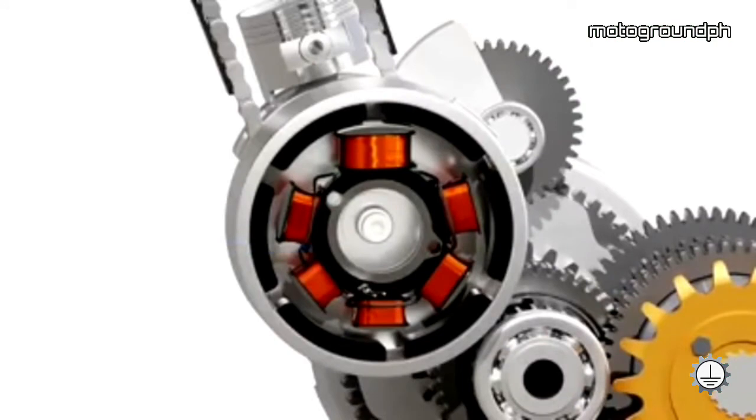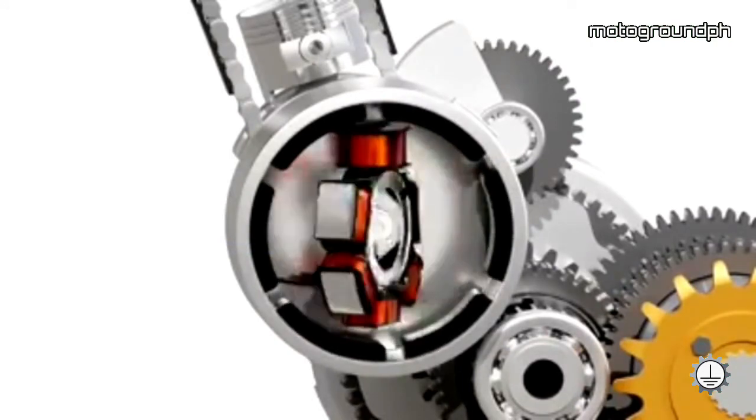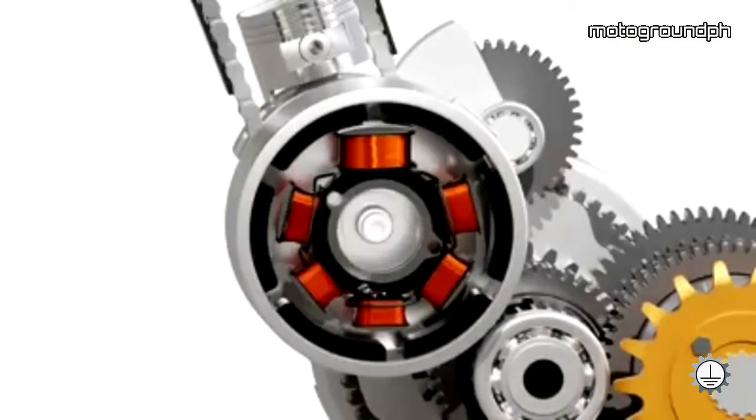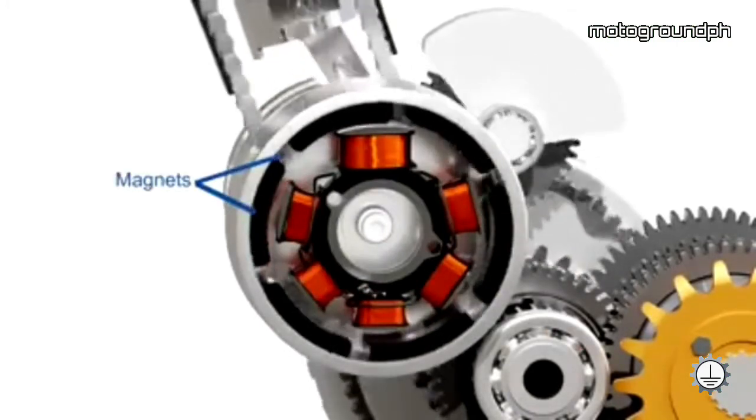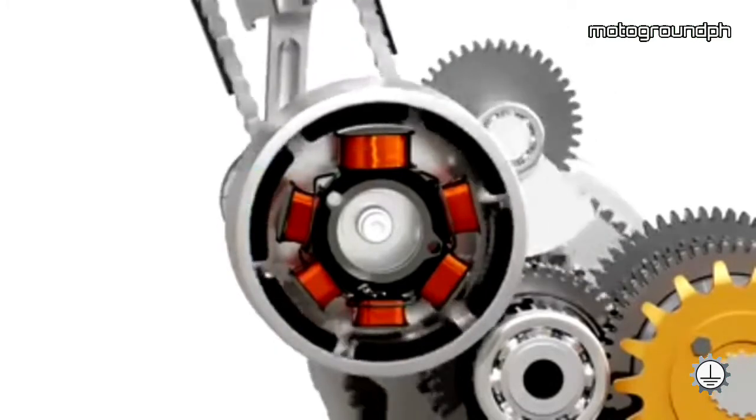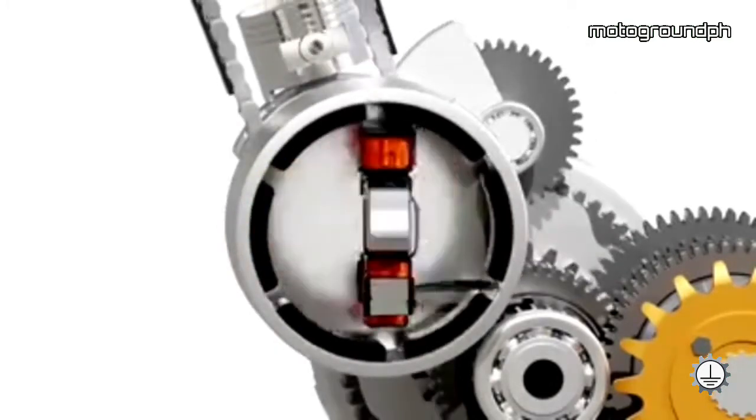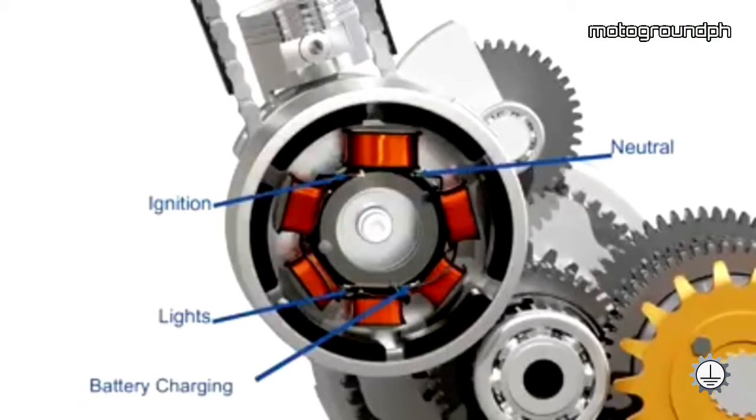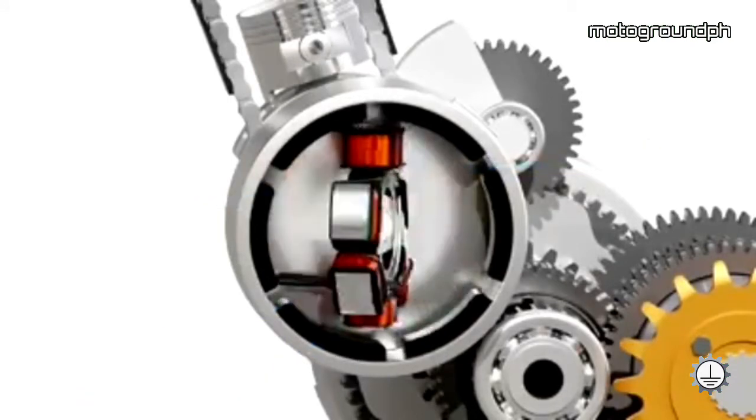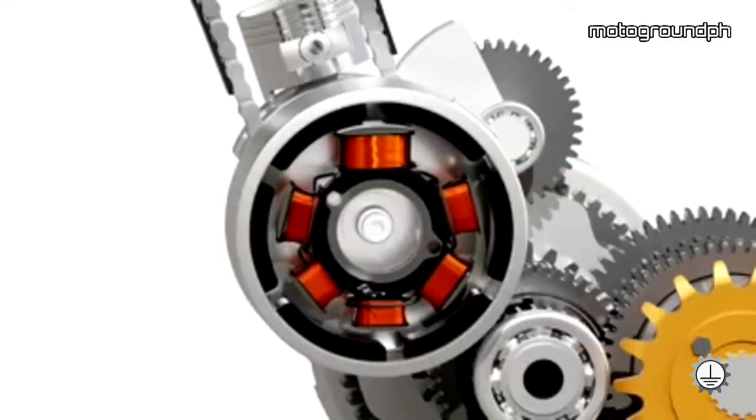The stator is a stationary coil of wires. The flywheel of the motorcycle has a set of permanent magnets which revolves around the stator and produces alternating current in the coils. Each output from the stator has different purposes as shown here. The output for the ignition purpose is received from the exciter coil. This coil has a denser winding of thinner wire than the other coils to produce higher voltage for the ignition.